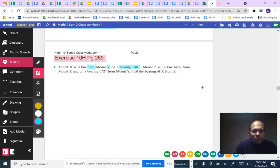Mount X is nine kilometers from Mount Y on a bearing 146 degrees. Mount Z is 14 kilometers away from Mount X and on a bearing 072 degrees from Mount Y. Find the bearing of X from Z.